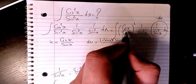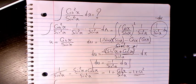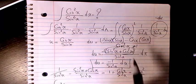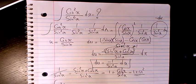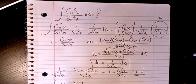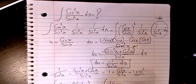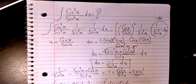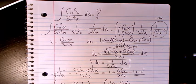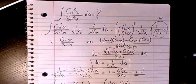This part is u squared, one over sine squared is one plus u squared, and this part is negative du. So it's going to be negative u squared times one plus u squared du, which gives negative u squared plus u to the power of four du.